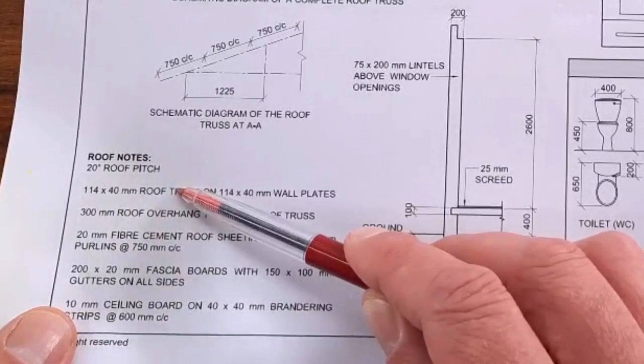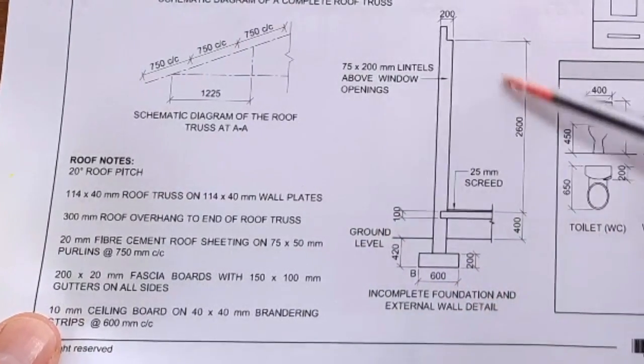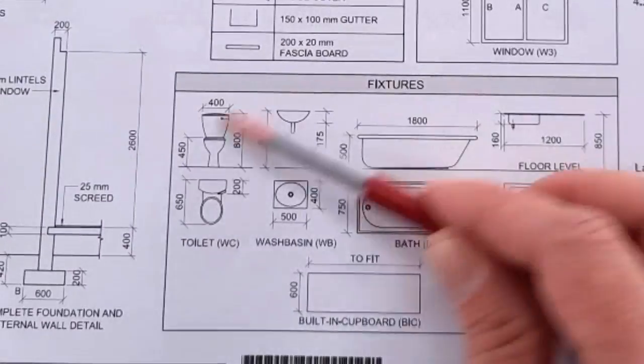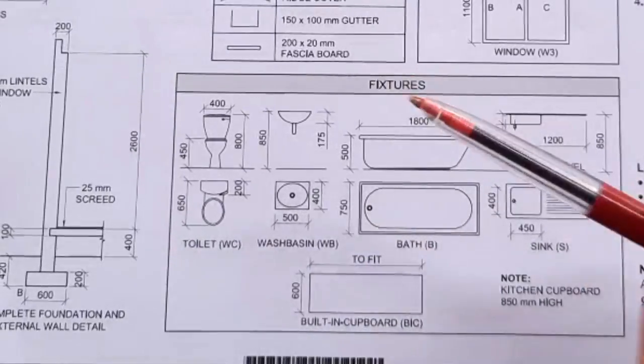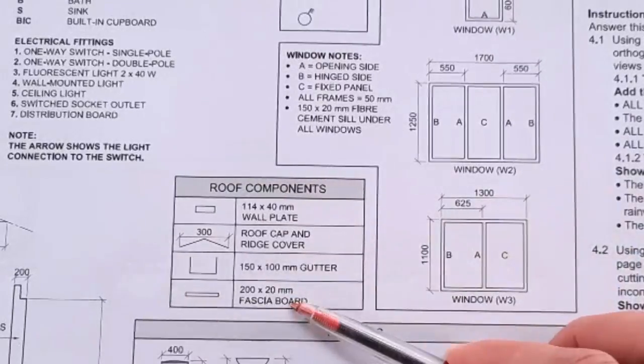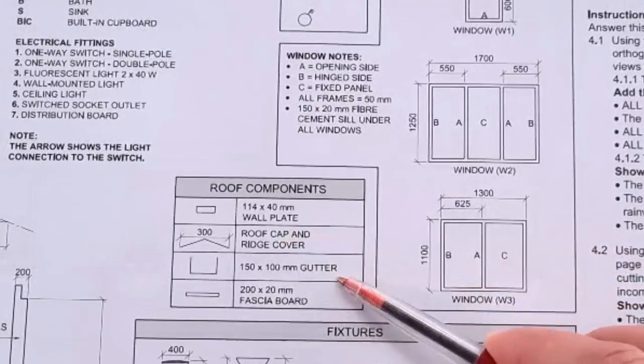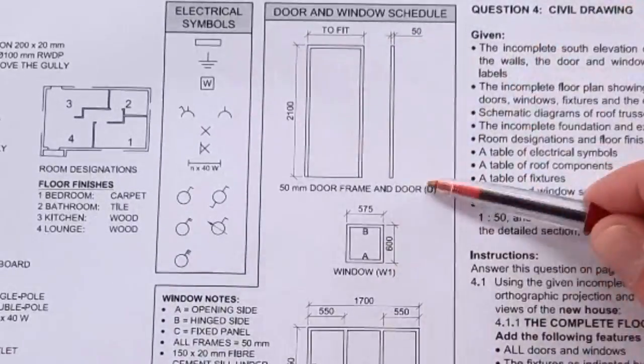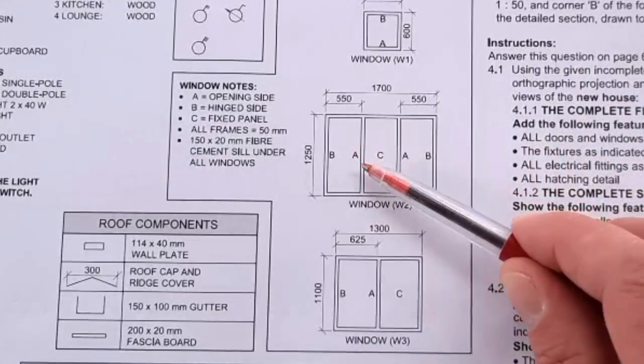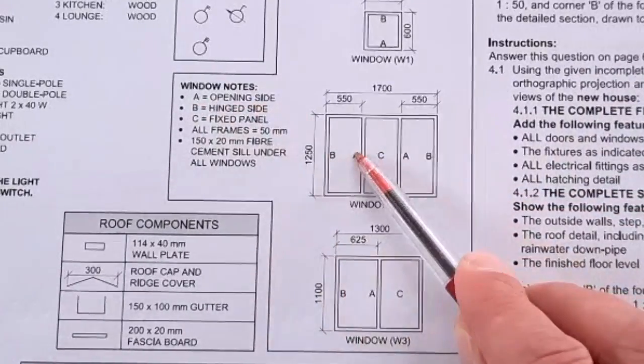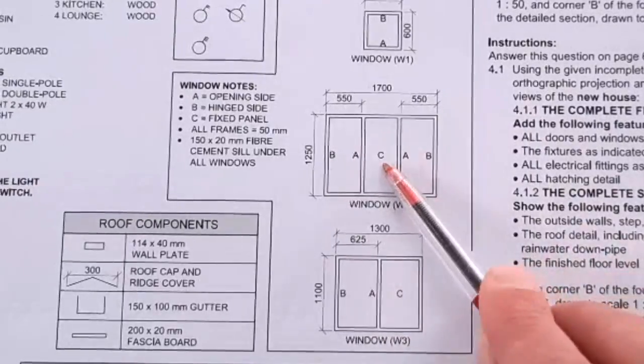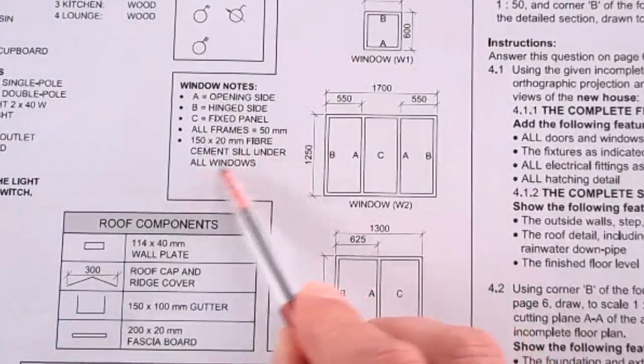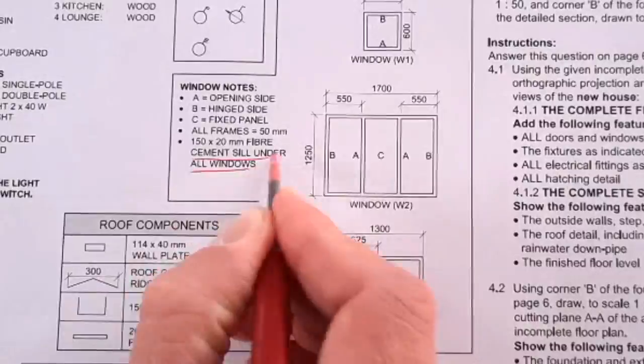Make sure you know what all these different components mean. You've got your incomplete foundation detail, your fixtures, the sun symbols. You've got your roof components - wall plate, ridge cover, roof cap, gutters, fascia boards, all of this important information. Then you've got your door and windows schedule showing where's the opening side, where's the hinge side, which panels are fixed. All frames 50 millimeters, fiber cement sills under all.